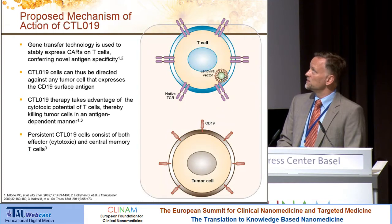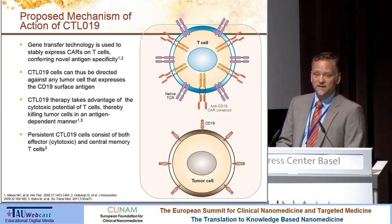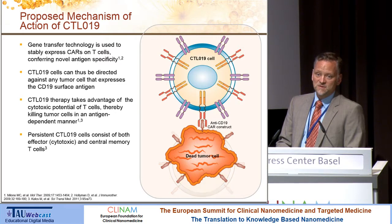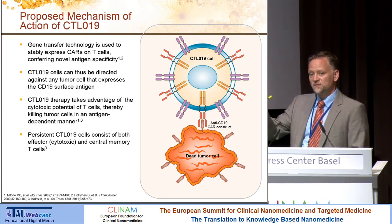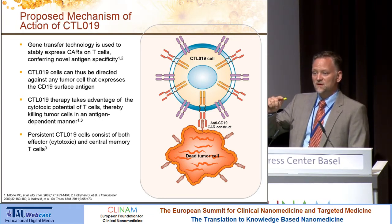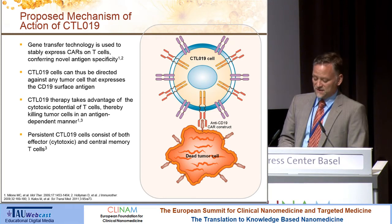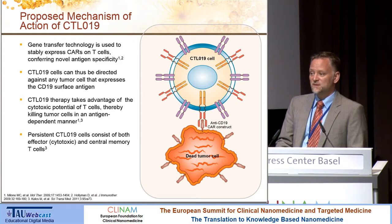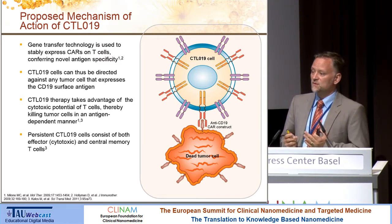We have a lentiviral vector that codes for the CAR. The cells then express the CAR construct, bind tumor cells, and kill the tumor cells. This is really the acute phase of cell killing. What we see in clinic is a massive proliferation and activation of the infused CAR T-cells that home to the tumor and destroy it. In addition, we observe persistence of the CAR-expressing T-cells at very low levels, giving long-term immunosurveillance very similar to a vaccination effect.